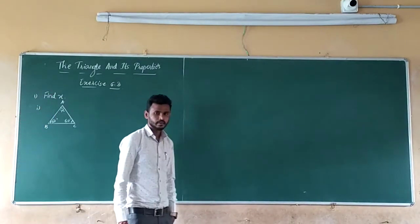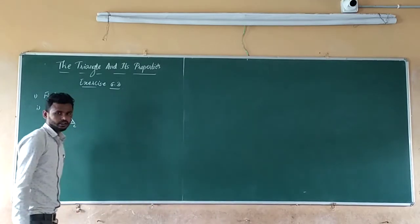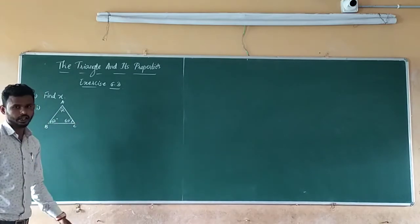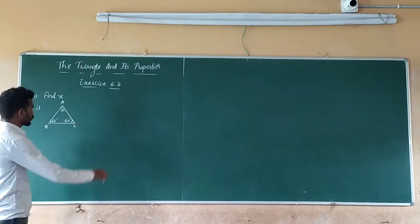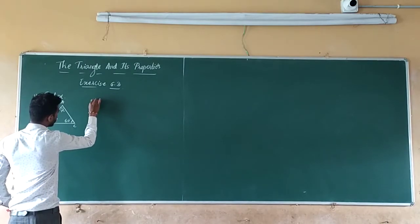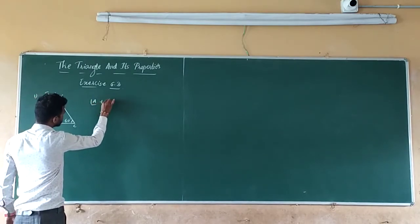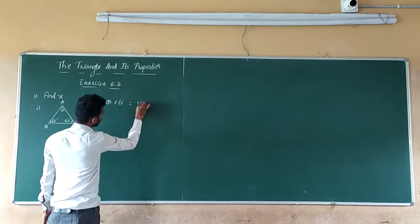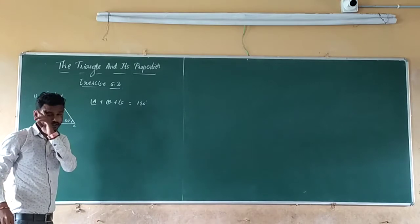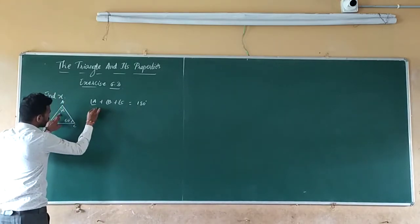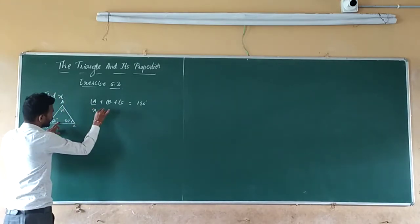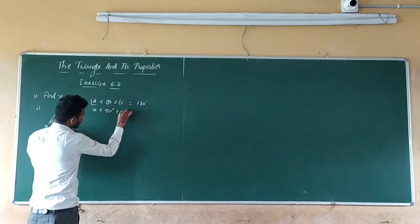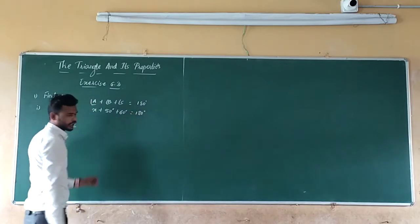That is, by the angle sum property of a triangle. Angle sum property means the sum of all three angles of a triangle is 180 degrees. So what you can write now: Angle A plus angle B plus angle C is equal to 180 degrees. So angle A is X, angle B is 50 degrees, plus angle C is 60 degrees, which is equal to 180 degrees.